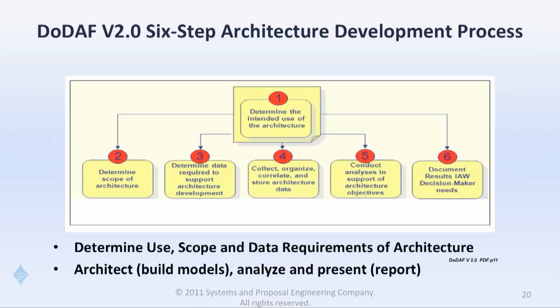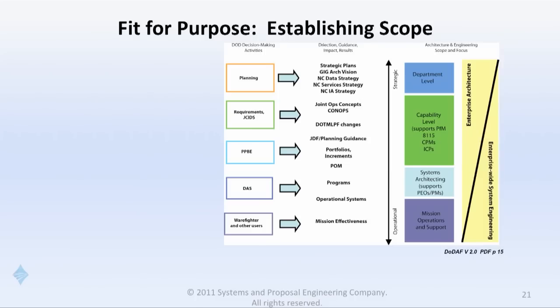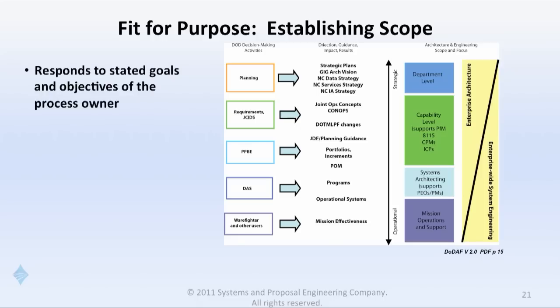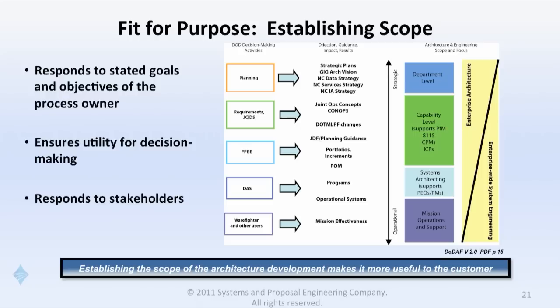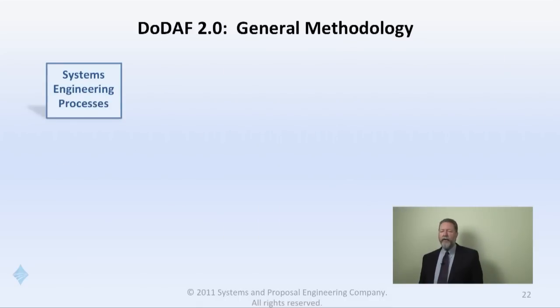A key issue is scope. You take a variety of perspectives — from planning and the defense acquisition system — understand what the architecture owner's objectives are, and then respond to what the decision makers need. Decision makers are shown in the left columns, and what they need is shown in the far right column. You have an encompassing scope that you narrow down for each stakeholder. It is absolutely essential to understand who the customers are and what they need to ensure that is included in your architecture.